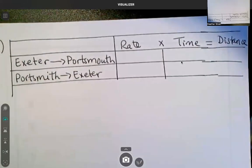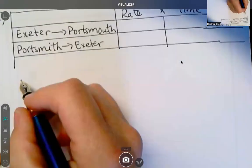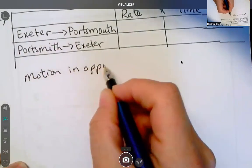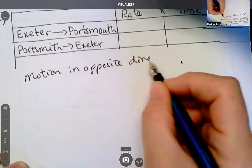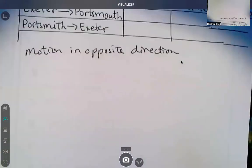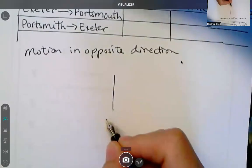Okay, let us finish up number seven, which we said is motion in opposite direction. And we got, okay, they meet in the middle, right? Okay, this is the meet point.